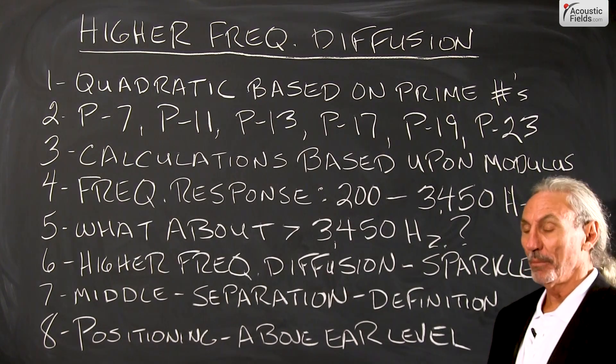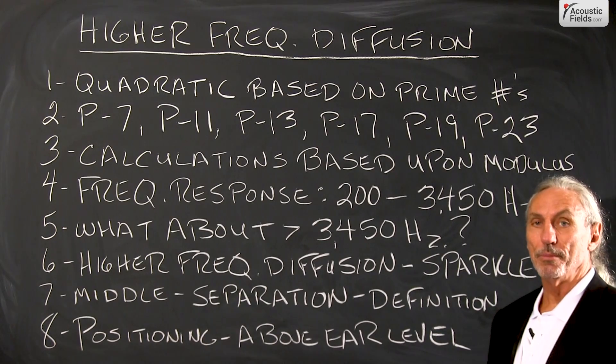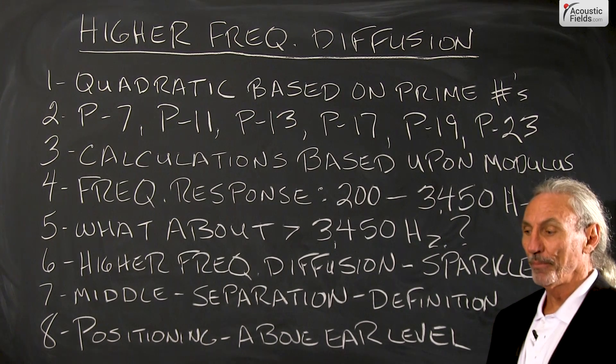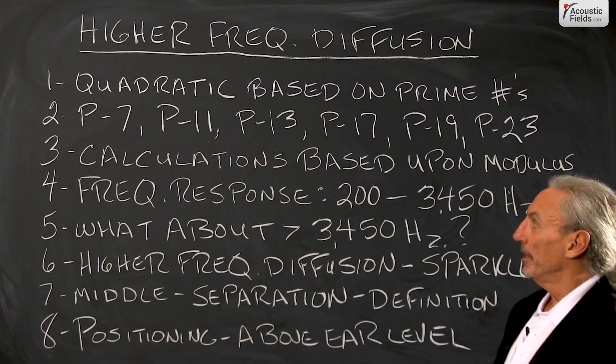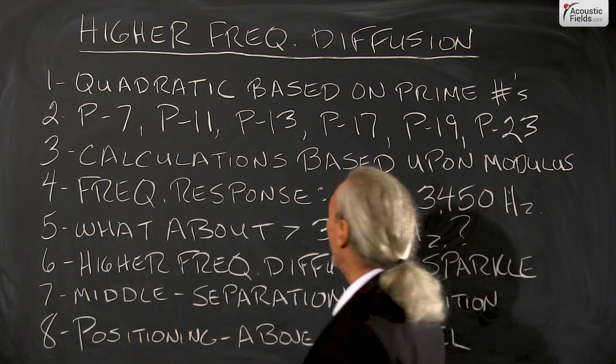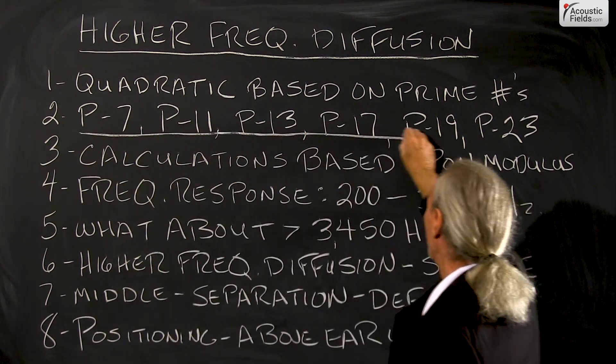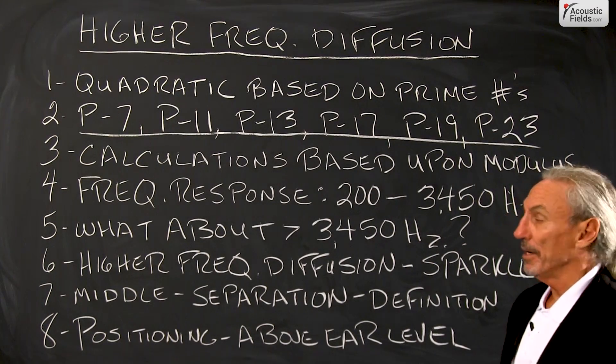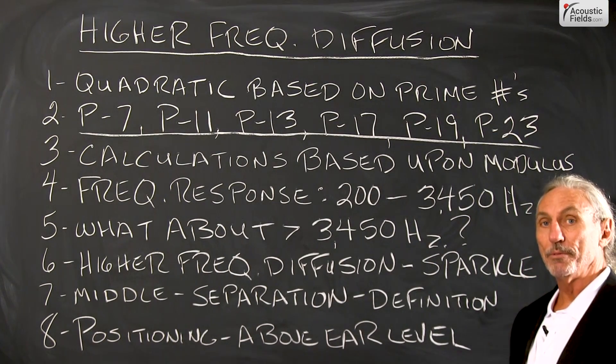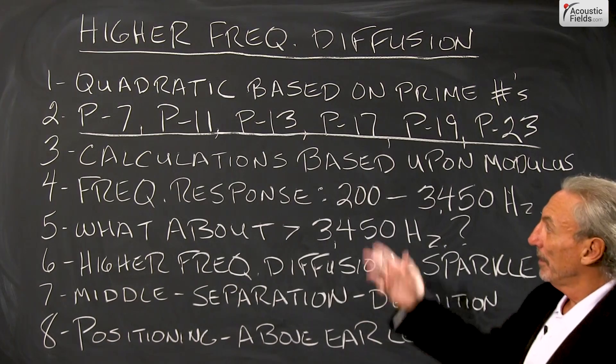In most of our discussions we talk about vertical, horizontal, two-dimensional, one-dimensional diffusion, and that's diffusion that is quadratic and it's based on some prime numbers. And we know from our math training hopefully that a prime number is a number divisible by itself and one.